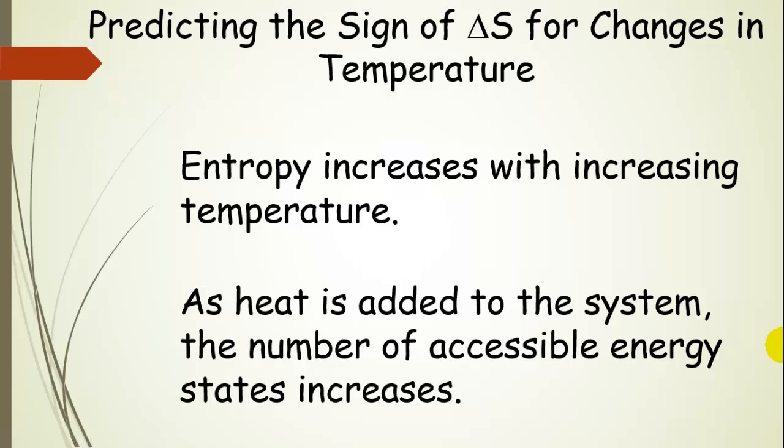Now, entropy increases with increasing temperature. So as we add heat to the system, the number of accessible energy states increases. And that's what we saw in the previous slide. The hotter the object is, the larger the number of accessible energy states for that substance.